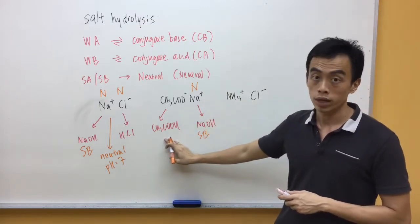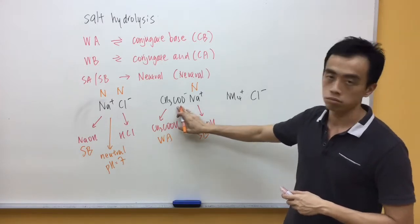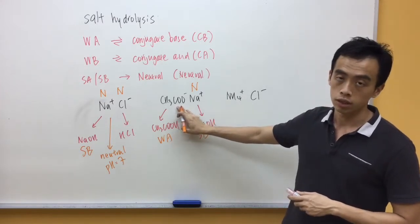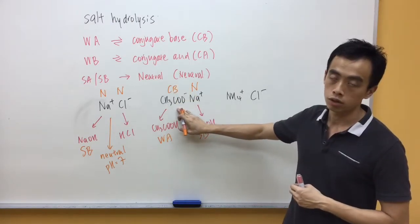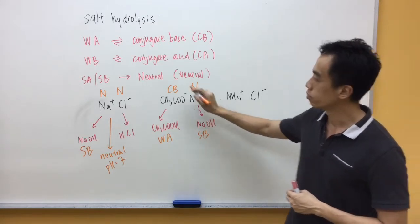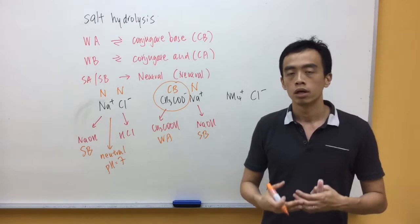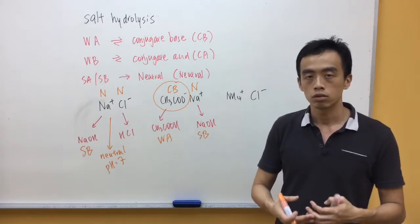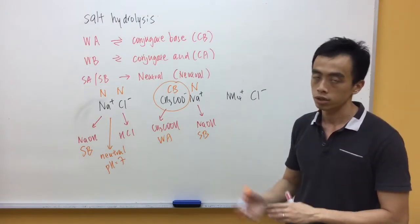Now, CH3COOH is a weak acid. Weak acid, remember the conjugate form or the counter ion form is a conjugate base. We have CH3COO- which is a conjugate base. Na+ which is neutral. So, because of this conjugate base, we expect CH3COO- to dissociate in solution to form OH-. Therefore, this salt is alkaline.